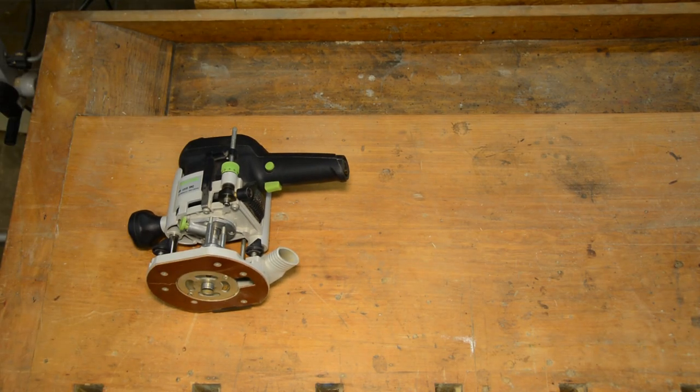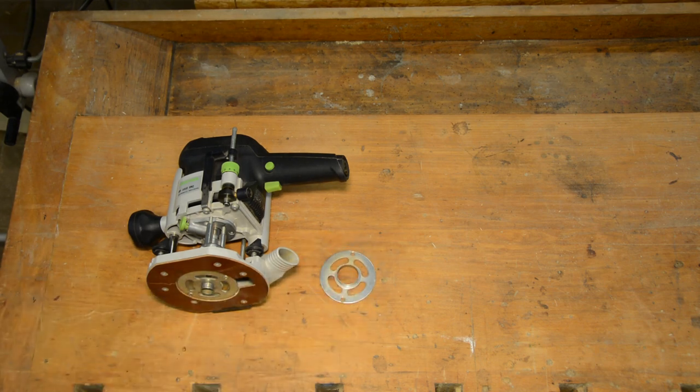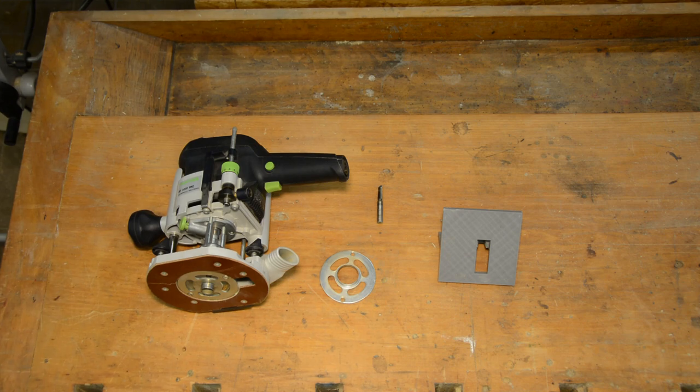All you need is a router, a straight router bit, a guide bushing, the 3D printed jig and a clamp.